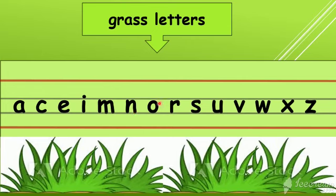O — round and round. L — go down, come up and turn a little.